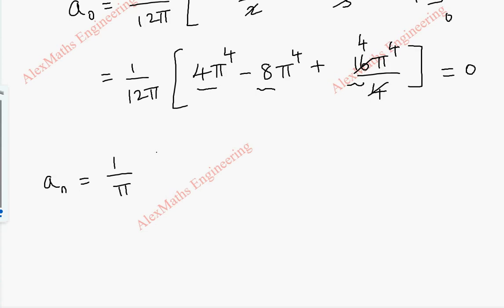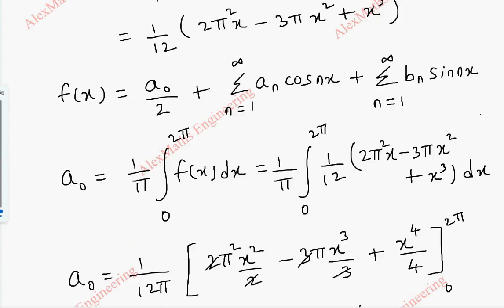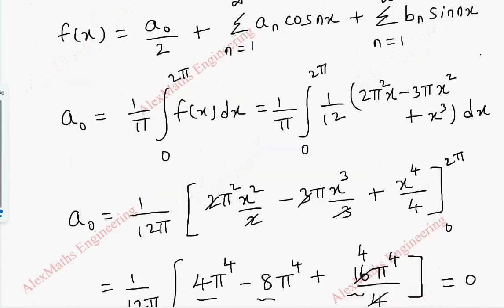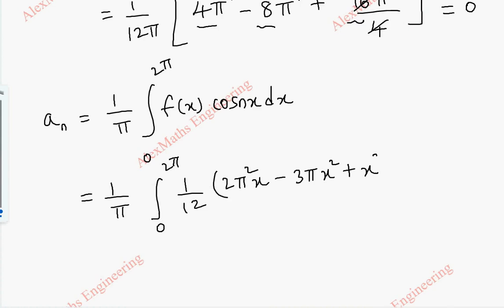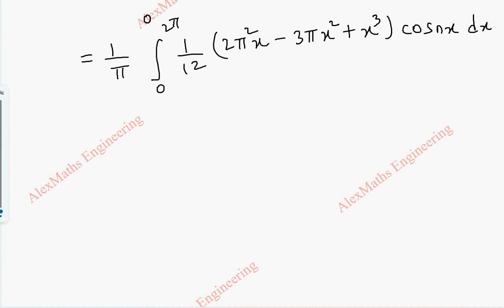Now coming to aₙ. The formula is (1/π) ∫₀²π f(x) cos(nx) dx. So this is (1/π) ∫₀²π (1/12)(2π²x - 3πx² + x³) · cos(nx) dx. Here we are going to follow Bernoulli's integration, where the polynomial part is u and cos(nx) is v.